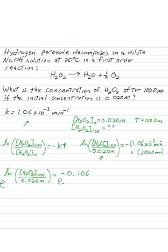And so E to the natural log of something is just going to leave us with that something. So those two things go away and we end up with concentration of H2O2 at time 100 equal to 0.020 molar times E to the negative 0.106. Plug that into your calculator and you get 0.8994. And now we can multiply both sides by 0.02 molar and we end up with a concentration of H2O2 at time 100 equaling 0.018 molar.